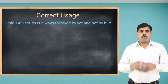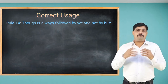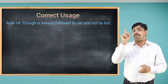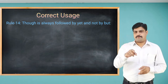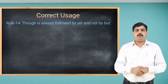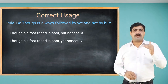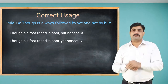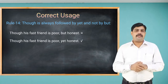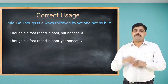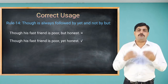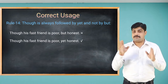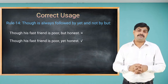Rule number 14: 'though' is always followed by 'yet', and not by 'but'. For example, 'Though his fast friend is poor but honest' is wrong. The correct sentence is: 'Though his fast friend is poor, yet honest.' Now the sentence is right.